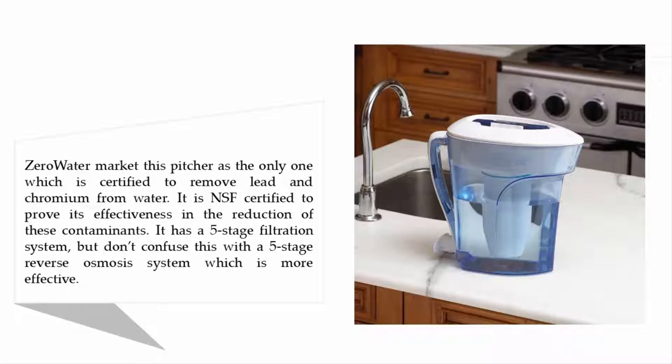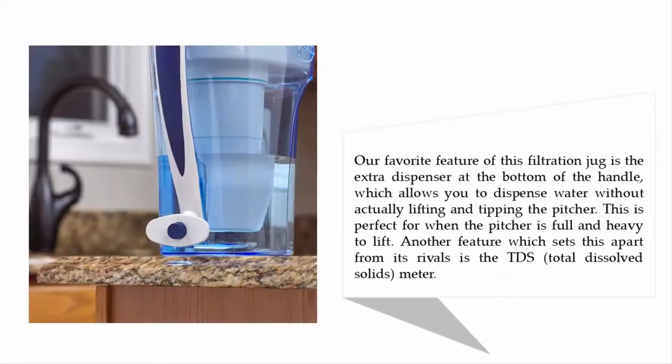in the reduction of these contaminants. It has a five-stage filtration system, but don't confuse this with a five-stage reverse osmosis system which is more effective. Our favorite feature of this filtration jug is the extra dispenser at the bottom